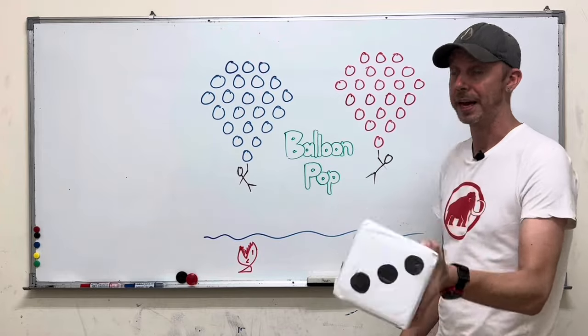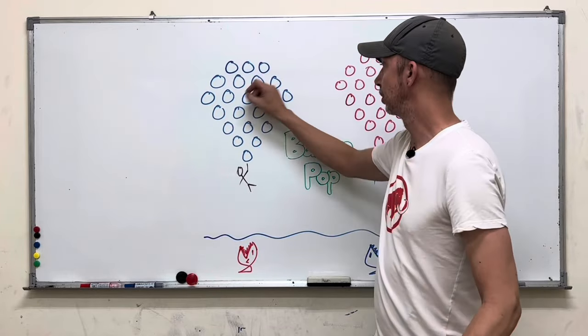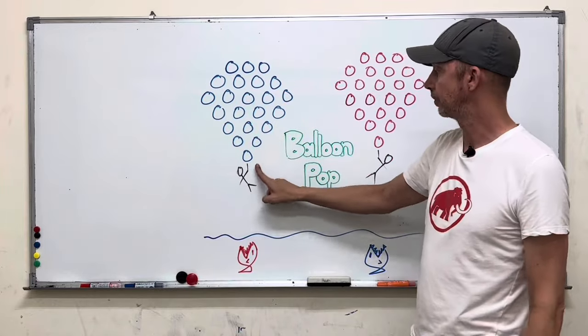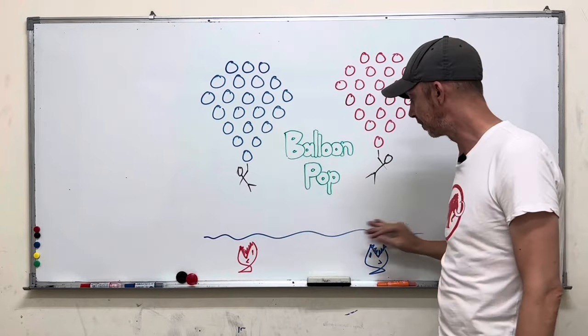When you come into the classroom you're going to prepare a dice and you will draw equal number of balloons in two different colors on either side of the whiteboard. From the sets of balloons you'll draw a dangling stick figure over something dangerous.